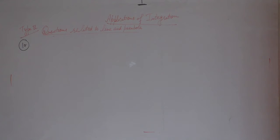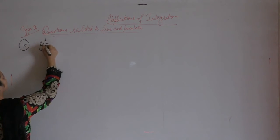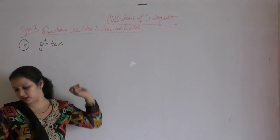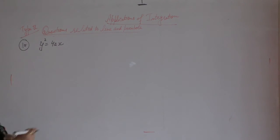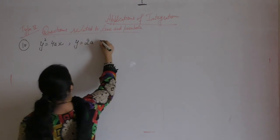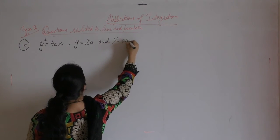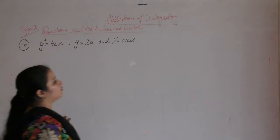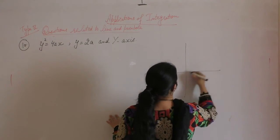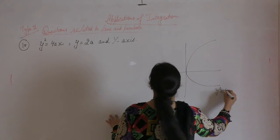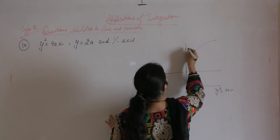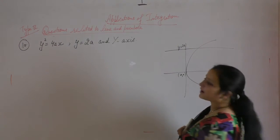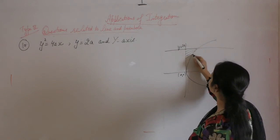Find the area bounded by the curve y² = 4ax, the line y = 2a, and the y-axis. Since the boundary is along the y-axis, we will find the area of this region.